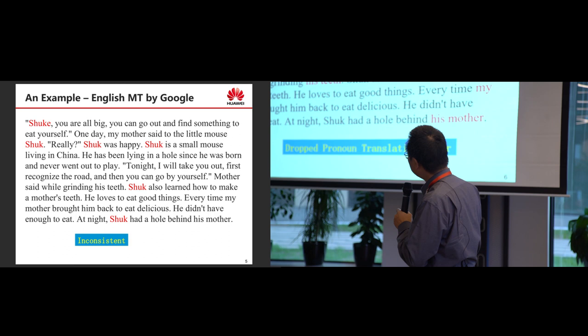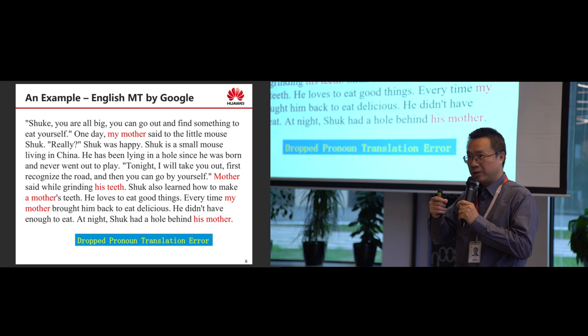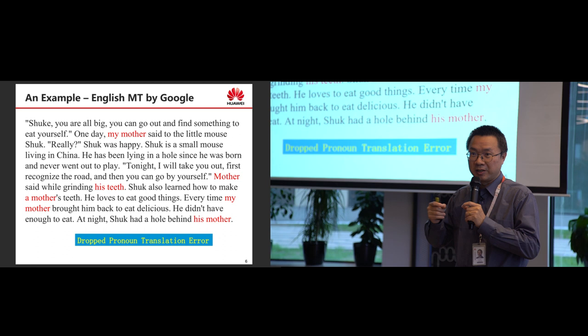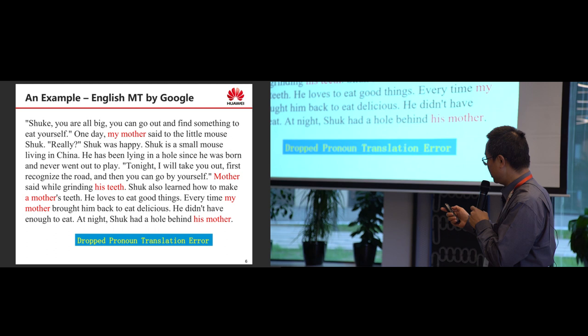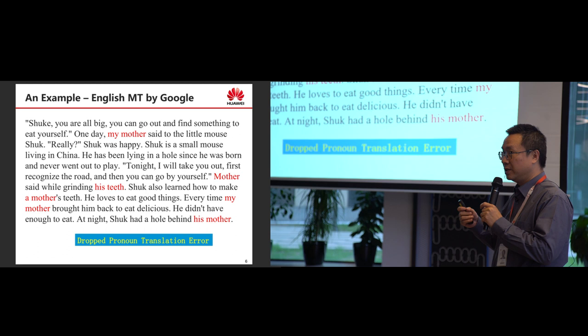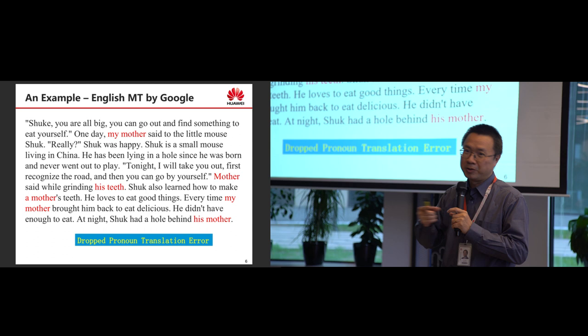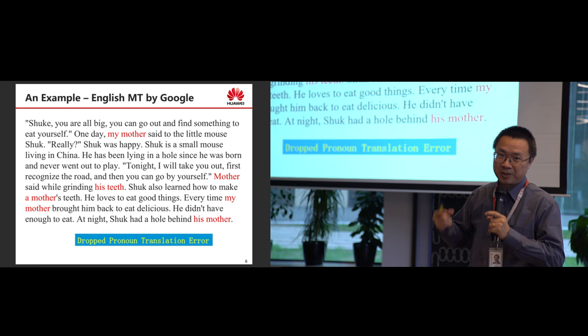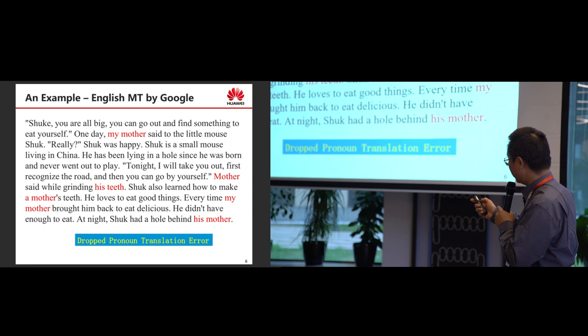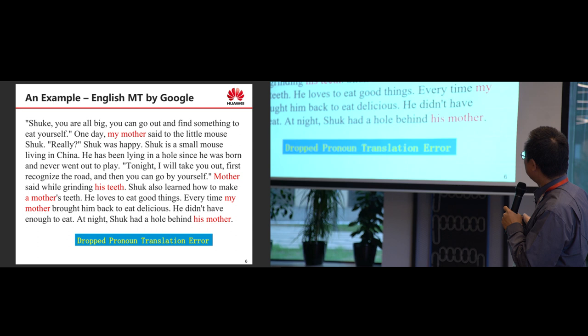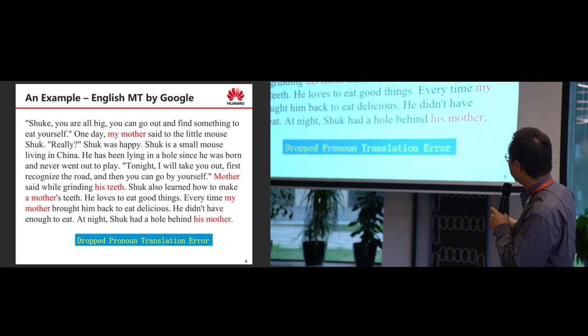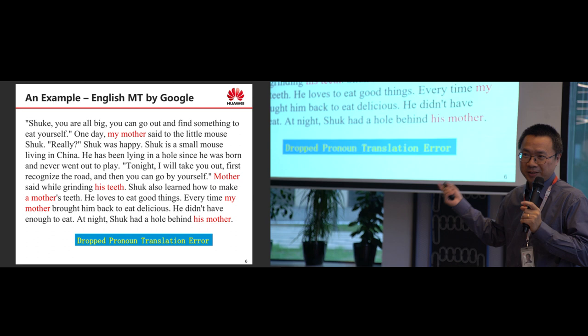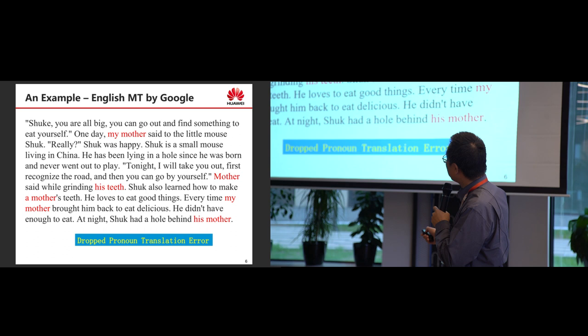In Chinese, when we say 'mother' we don't need to say 'my mother,' 'your mother,' 'a mother,' or 'the mother' — we just say 'mother.' But in English you should say 'my mother' or 'his mother'; you need a determiner. So here it says 'my mother' but it should be 'his mother.' Also, 'mother said while grinding his teeth' should be 'her teeth.' You can see there are so many errors here. Also, the same phrase is translated differently — 'grinding his teeth' in one place and 'make a mother's teeth' in another.